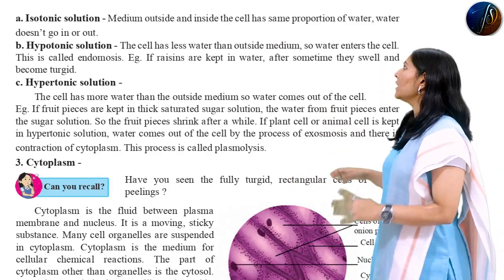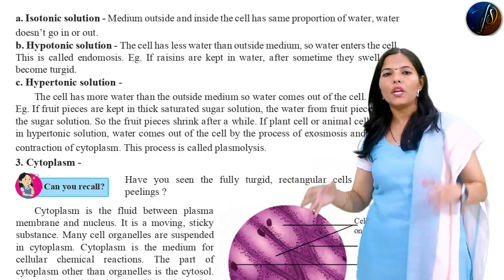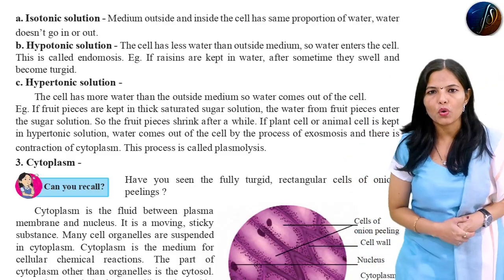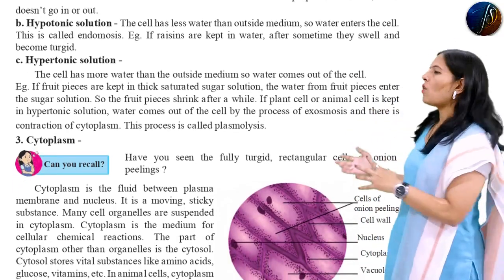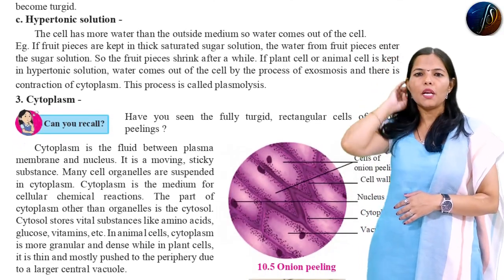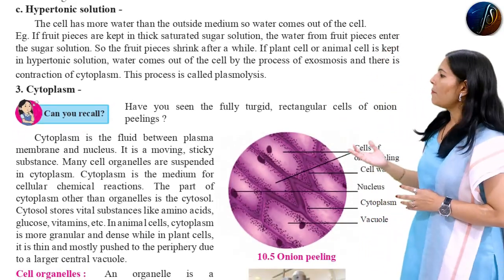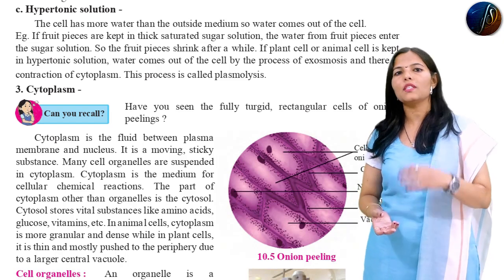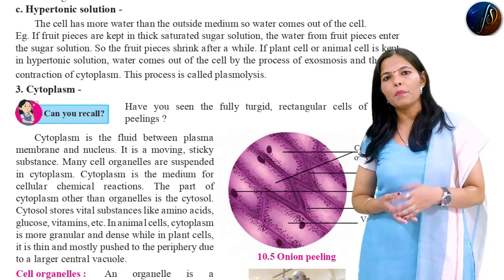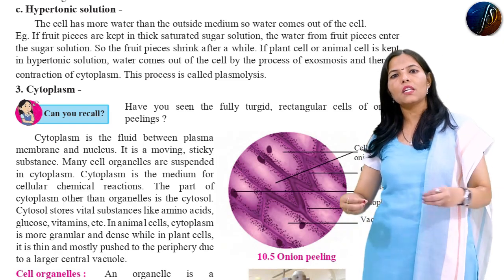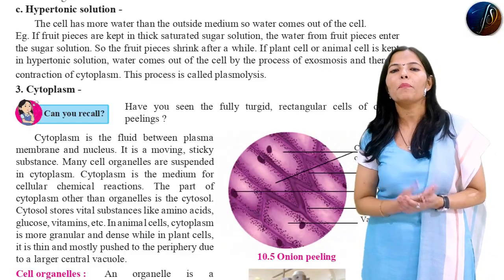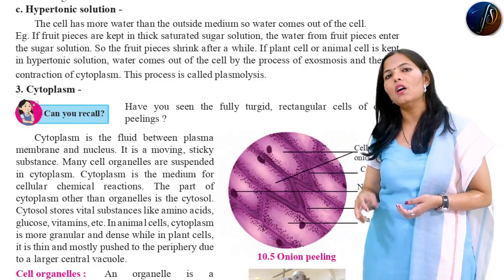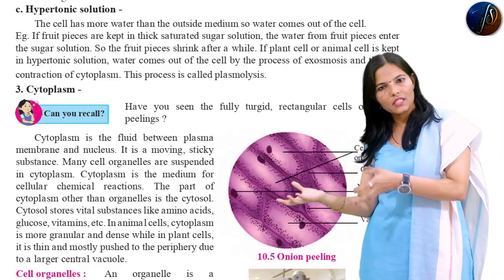Hypotonic and isotonic solution properties are clear. The cell has less water than the outside medium, so water enters the cell — this is called endosmosis. We can take the example of raisins in water due to the hypotonic solution or endosmosis, because water moves in.